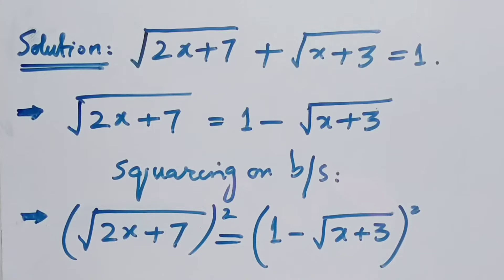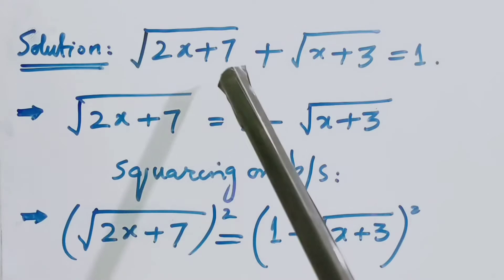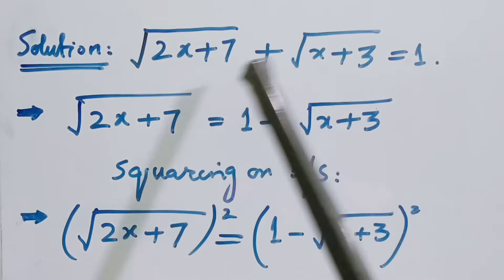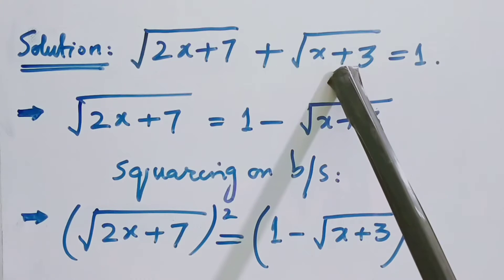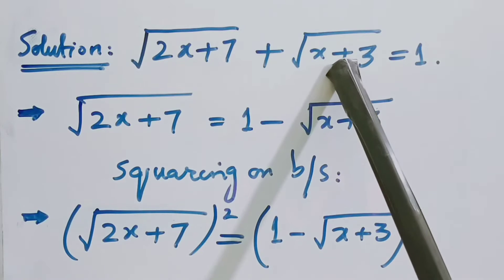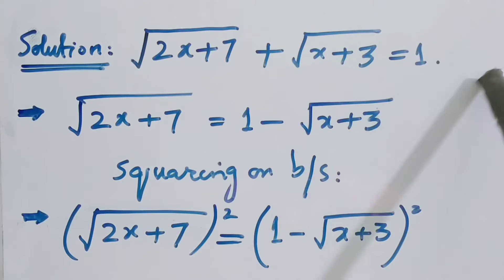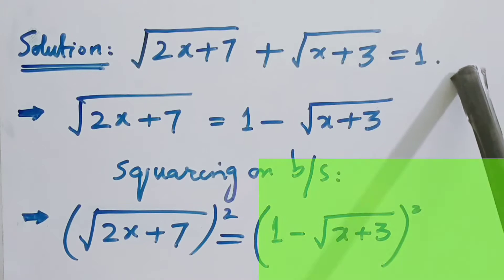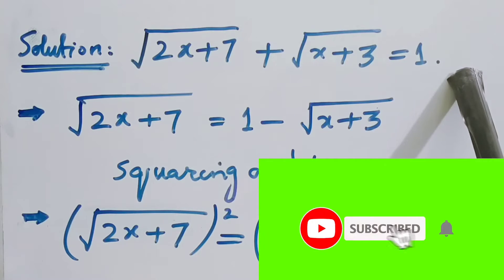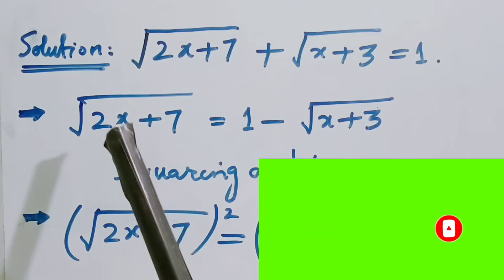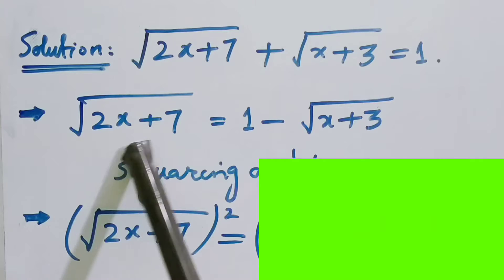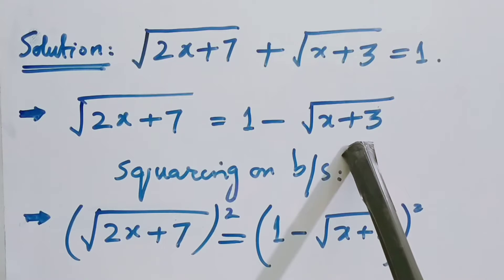The question has been given: root of (2x + 7) plus root of (x + 3) is equal to 1. We will solve this. We have two values inside root signs: root of (2x + 7) and root of (x + 3). We will shift one value to the right-hand side, giving us root of (2x + 7) equal to 1 minus root of (x + 3).